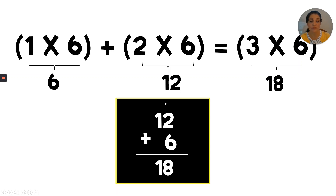Notice in my stacked addition equation I put the bigger number on top, aligned by place value. I have the two in the ones place, so I put the six in the ones place under the two. Two plus six is eight. In the tens place, one plus nothing is one — that's one ten. So the answer to 12 plus 6 is 18, and I know that should be 18.